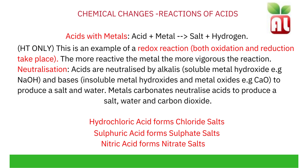Acids react with metals to form salt and hydrogen — an acid plus metal forms salt plus hydrogen gas. This is an example of a redox reaction, one in which both oxidation and reduction take place. The more reactive the metal, the more vigorous the reaction, and we would see this by more hydrogen gas being released. In neutralization reactions, acids are neutralized by alkalis, which are soluble metal hydroxides (for example, sodium hydroxide), and bases, which tend to be solids. Examples include metal oxides, metals, and metal carbonates, to produce salt and water. In the case of metal carbonates, it produces salt, water, and carbon dioxide.